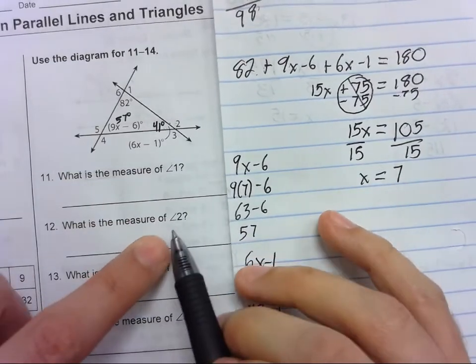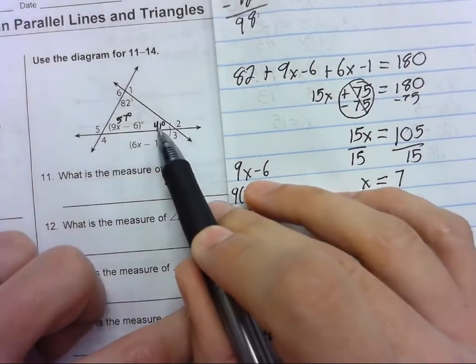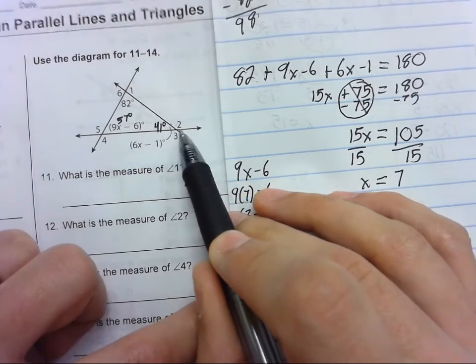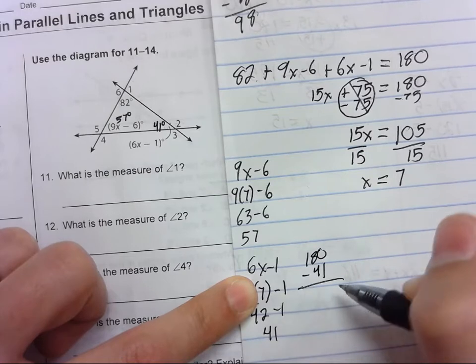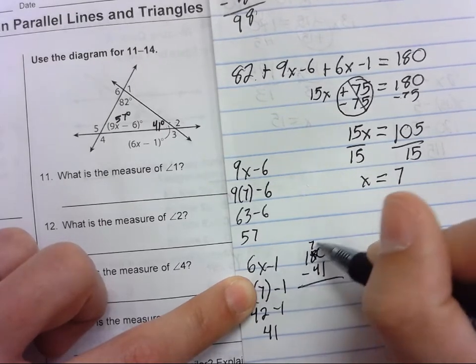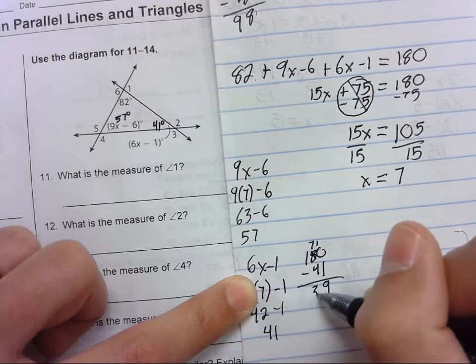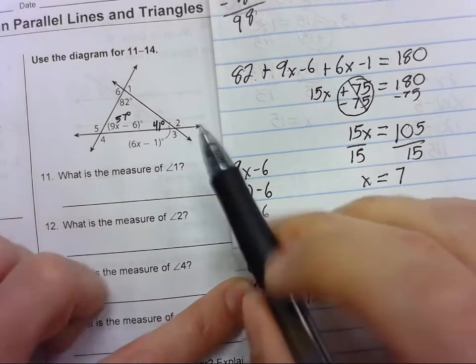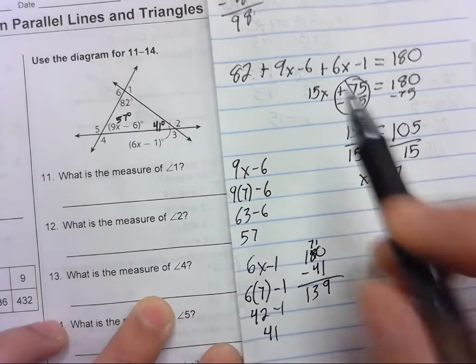So angle 1 we already did. What's the measure of angle 2? Angle 2. Well, this is 41. We know that this is a straight line, so all we have to do is 180 minus 41. 10 minus 1 is 9, 7 minus 4 is 3. So the measure of angle 2 is 139.